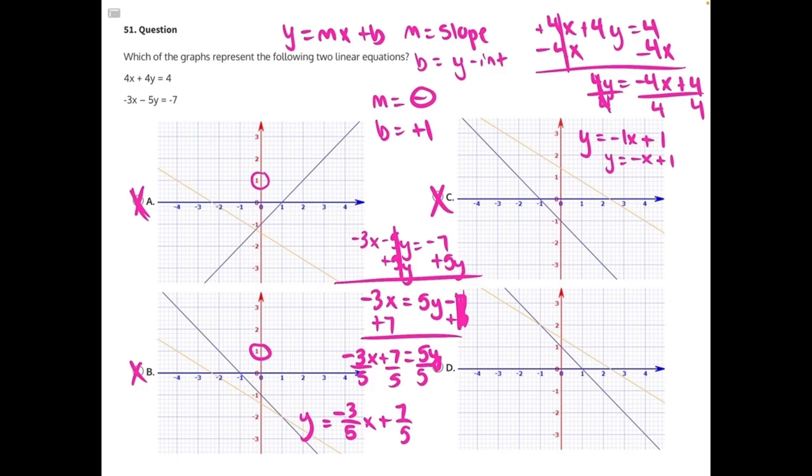Then we're looking for a y-intercept that is greater than 1. We could rewrite this mixed fraction as 1 and 2 fifths. So we would be looking for answer choice D, which has a y-intercept right at 1, and then has a y-intercept a little bit above 1 at that 1 and 2 fifths mark, making D the correct answer.